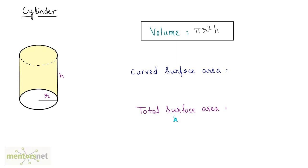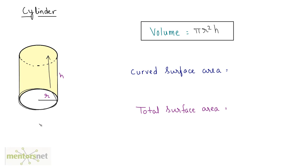Now let us move on to the curved surface area. If you assume that this is a pipe, the two ends are open — this is an open cylinder. So the area of the surface will be only of the curved surface. The curved surface area is defined as the circumference of the base circle times the height, something similar to length times breadth. So the curved surface area is 2πr times h, giving us 2πrh.